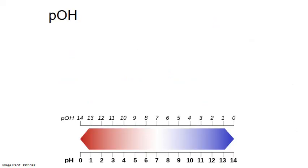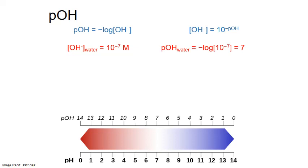pOH is another way of expressing the acidity or basicity of a solution. If pH is the negative log of the hydronium ion concentration, then pOH is the negative log of the hydroxide ion concentration — the same relationship, just a different ion. If the hydroxide ion concentration is expressed as a power of 10, pOH simply represents the positive value of that exponent. In water, the hydroxide ion concentration is 10 to the negative 7 moles per liter, so the pOH of water is 7.